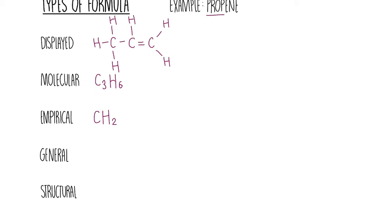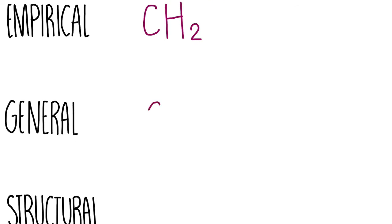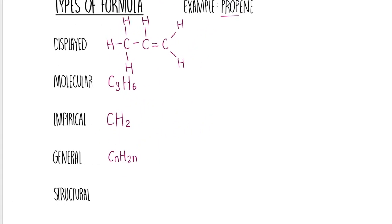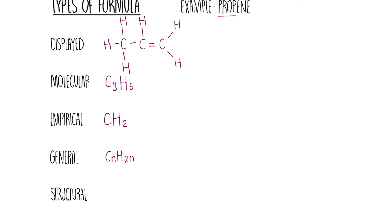The general formula is a bit more tricky. It might help for you just to memorize these. The general formula for alkenes is CNH2N. N just means when you have a certain number of carbon atoms. 2N means the same number times by two is how many hydrogen atoms you've got. You can see that that fits with the molecular formula of propene. If we have three carbon atoms, then we know we've got six hydrogen atoms because you just need to times N by two. The general formula for alkanes is CNH2N plus two. If we were talking about propane rather than propene, you would have C3H8 because you do three times two is six plus another two.